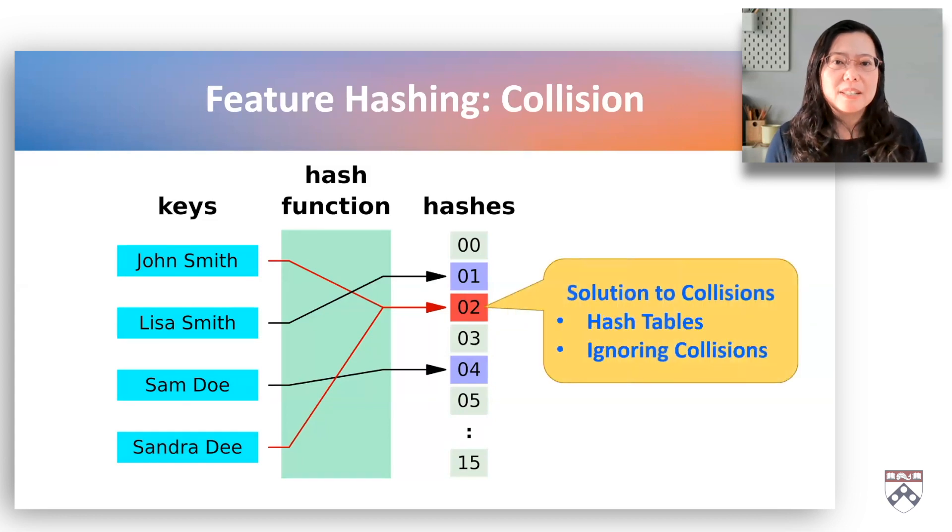However, in practice, the collisions are handled using various strategies, such as using a hash table, or simply ignoring clearance if they are drier and not significant.